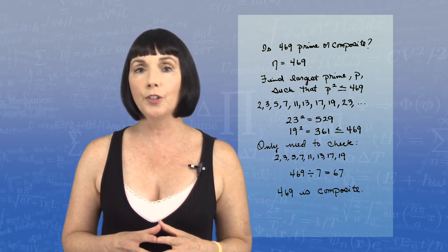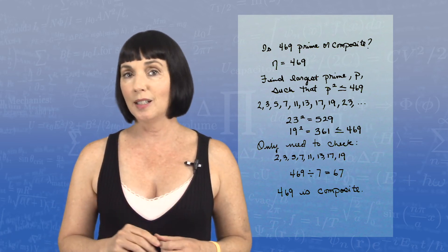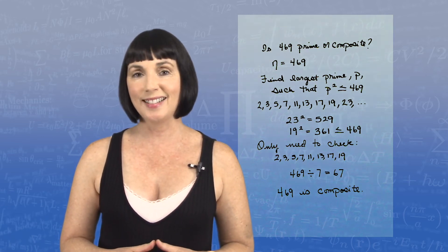If you'd like to take this a little further, use the theorem again to check if 67 is a prime or composite number. And then you can find the prime factorization of 469.